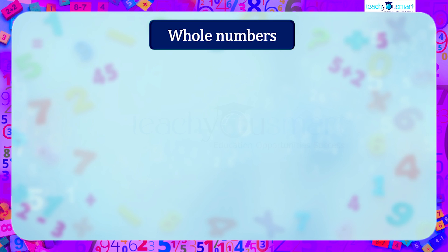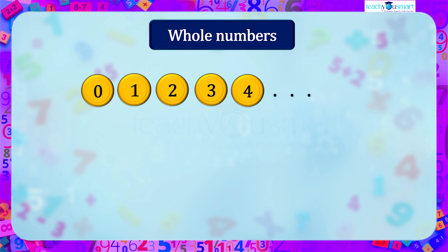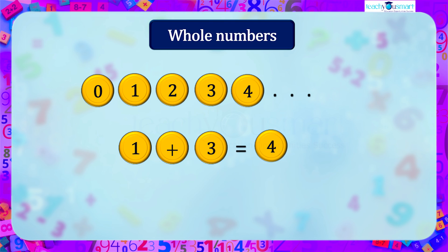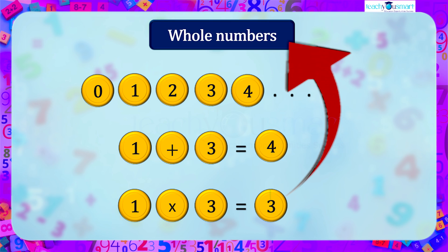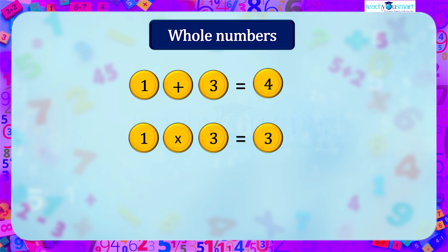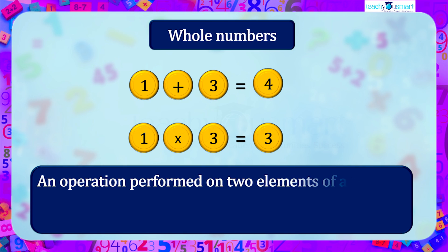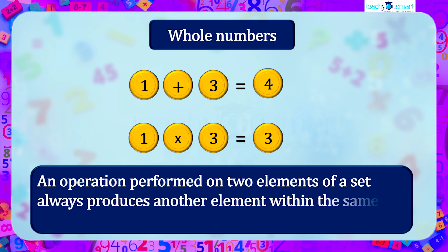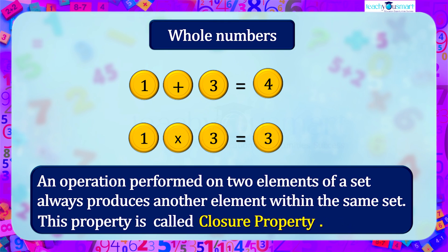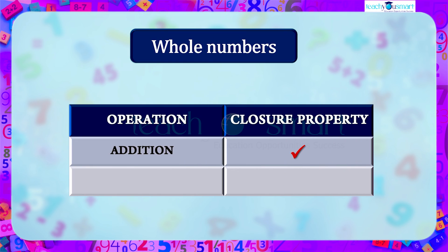We are familiar with whole numbers: 0, 1, 2, 3, 4, etc. If we add 1 and 3 we get 4 — here 1, 3, and 4 are whole numbers. When we multiply 1 and 3 we get 3, which is also a whole number. When an operation performed on two elements of a set always produces another element within the same set, this property is called the closure property. So whole numbers are closed under addition and multiplication.